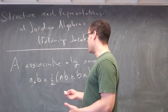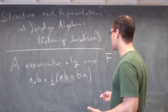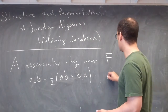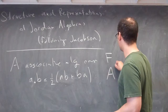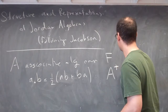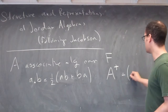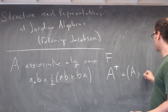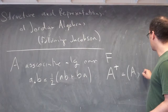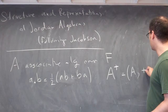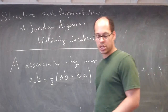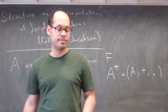A, endowed with this new multiplication structure, is usually written A plus. This is the underlying set of A together with its usual addition, but with this new multiplication — this lower dot multiplication.